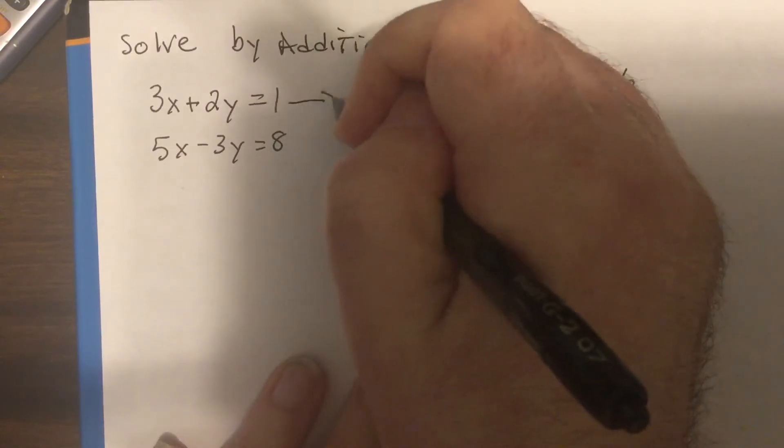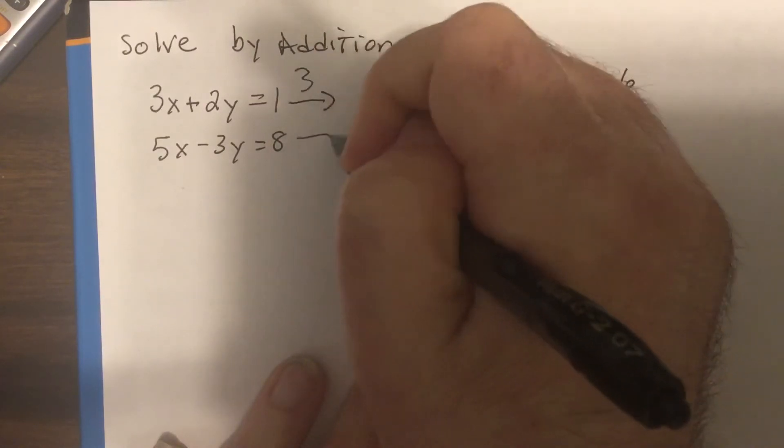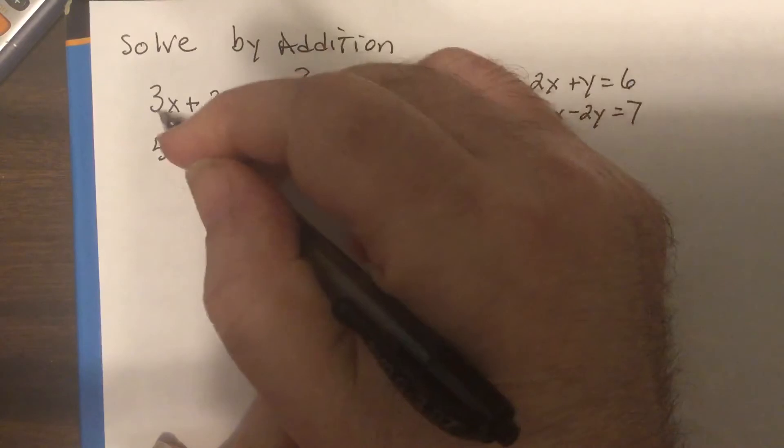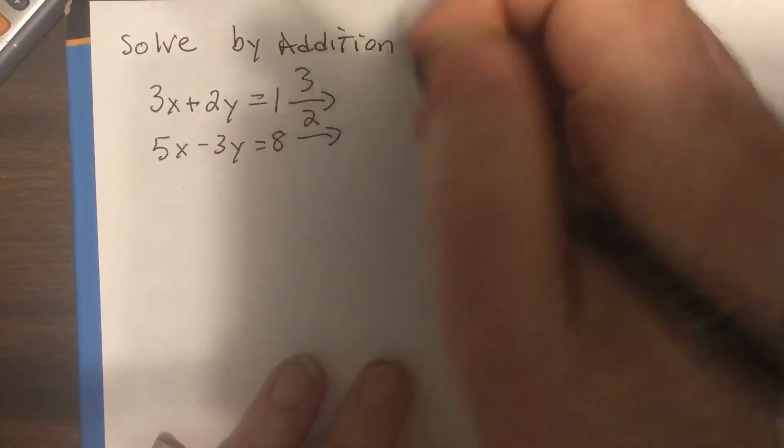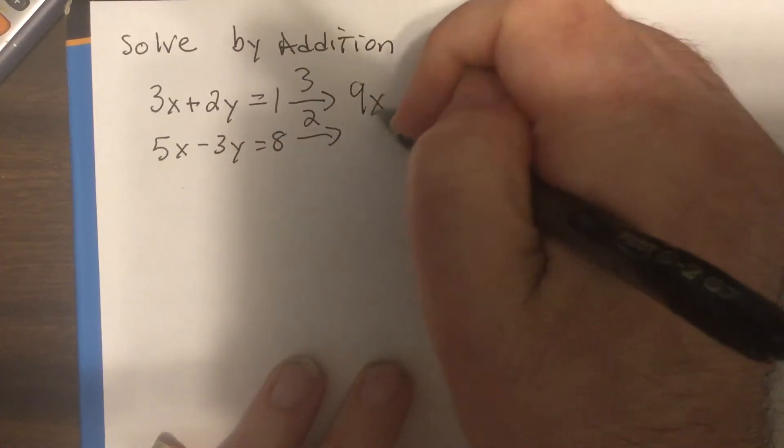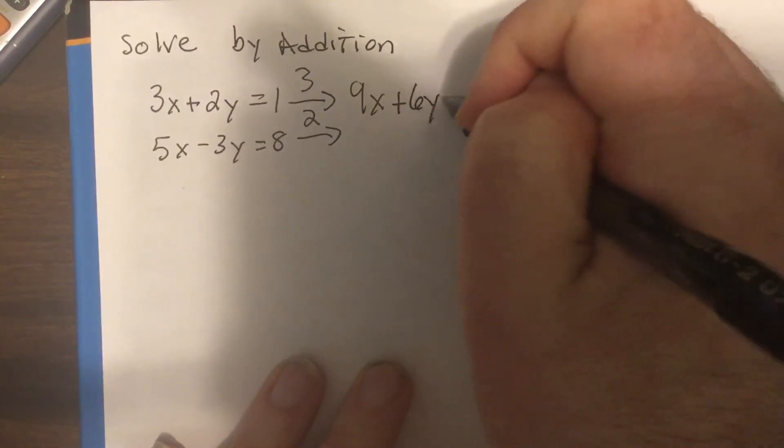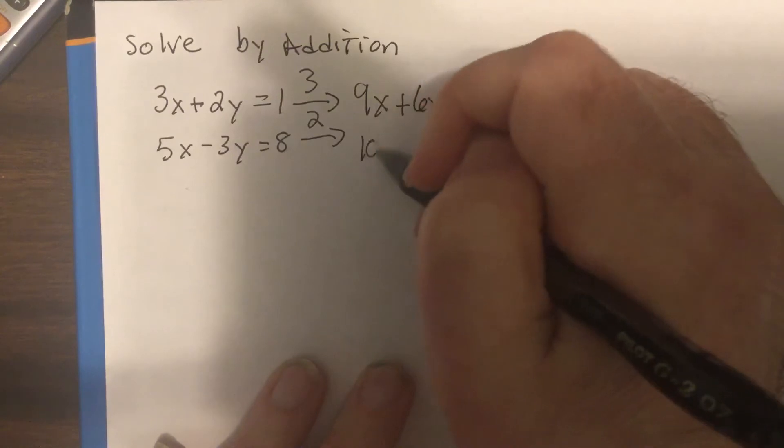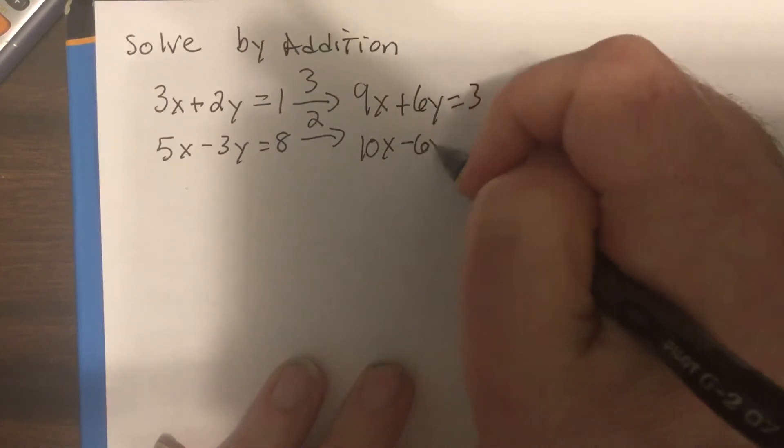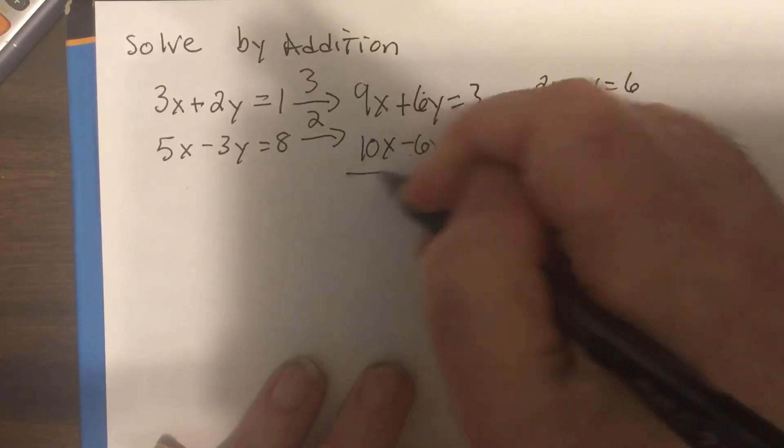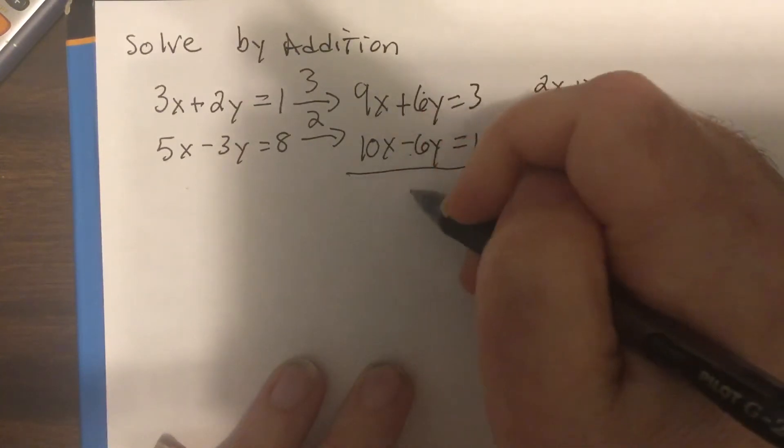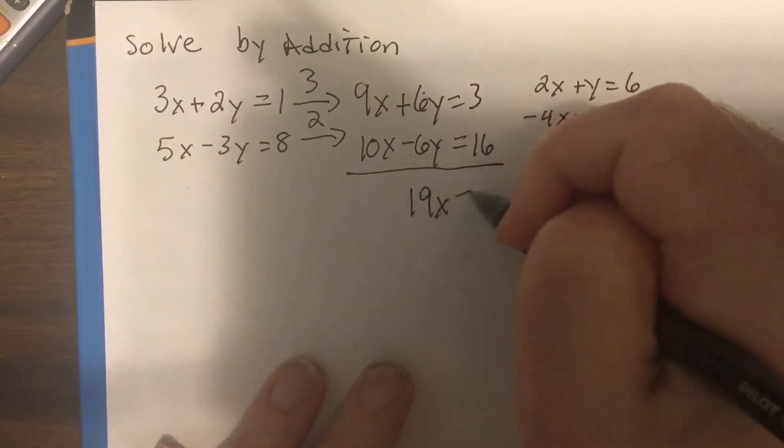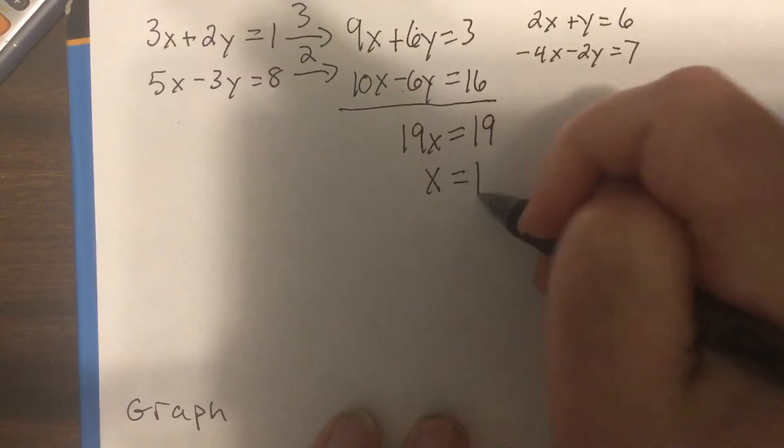Okay, so I'm going to multiply this one by 3 and this one by 2 to get opposite coefficients for the y. So it'd be 9x plus 6y equals 3 and this would be 10x minus 6y equals 16. So now these 6 and minus 6 are opposite coefficients. Combine it, it's 19x equals 19. Divide by 19, x is 1.